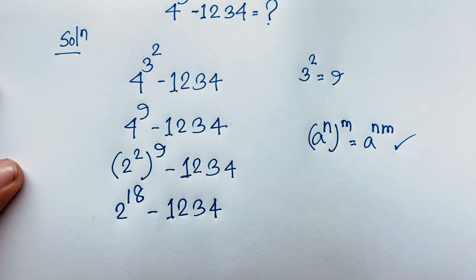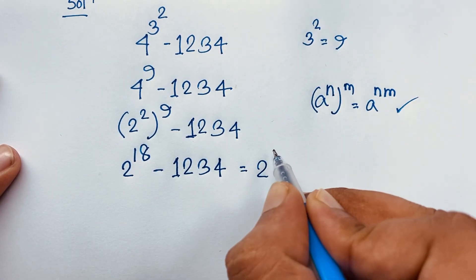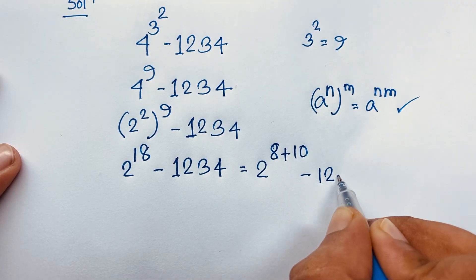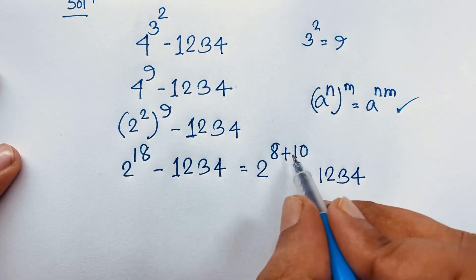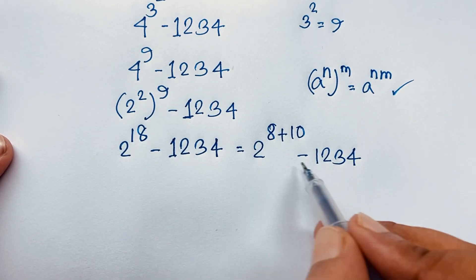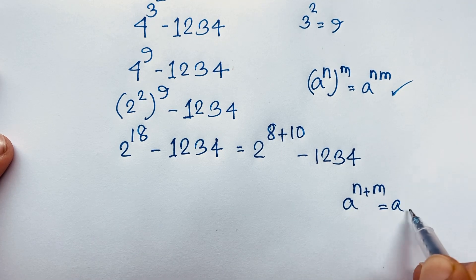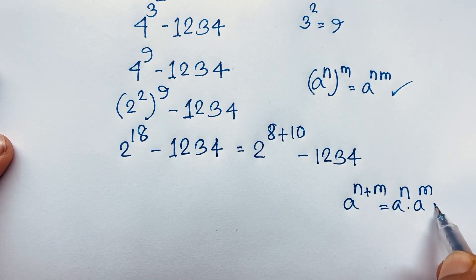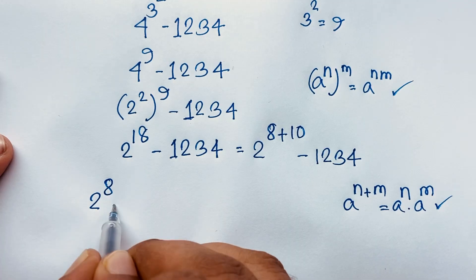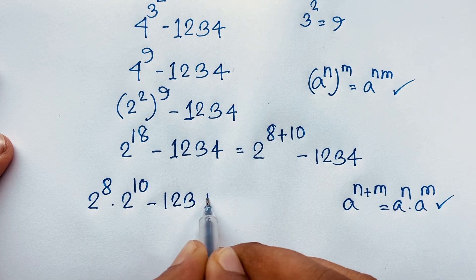Now, this is 2 to the power 18. We know that 18 equals 8 plus 10, so it will be 2 to the power 8 plus 10, minus 1234. If I apply the formula a to the power n plus m equals a to the power n times a to the power m, it will be 2 to the power 8 times 2 to the power 10, minus 1234.